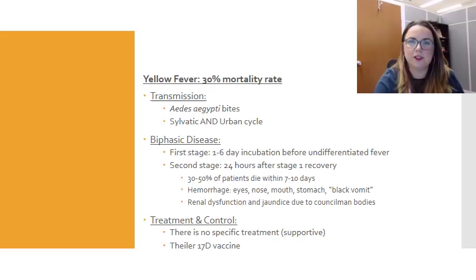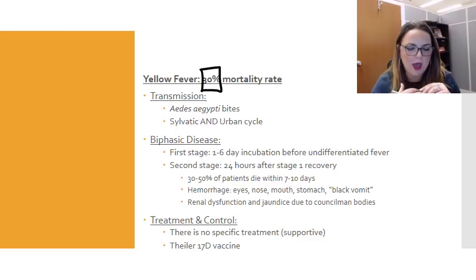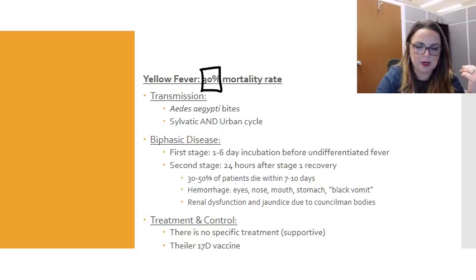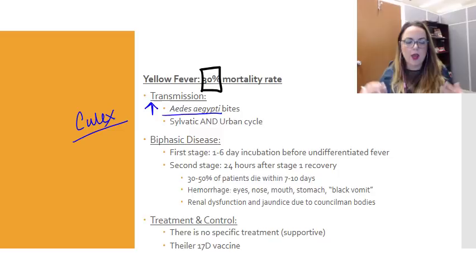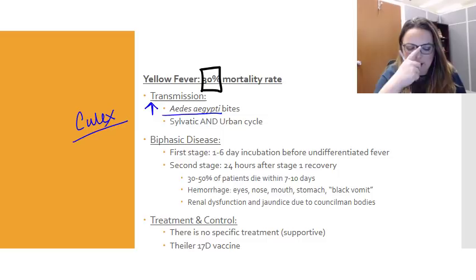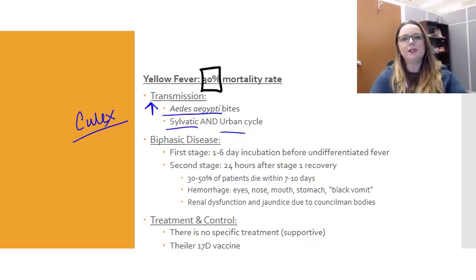Yellow fever is a pretty serious condition with about a 30% mortality rate. It is an arbovirus transmitted by the Aedes aegypti mosquito. It can also be transmitted by the Culex mosquito, which is bad news because the Culex is all over the United States, whereas the Aedes aegypti is making its way north. There is both a sylvatic and an urban cycle for yellow fever.